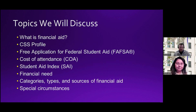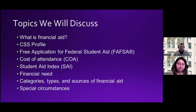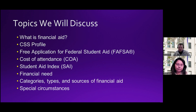We're going to get started with the presentation. Topics we will cover tonight: What is financial aid? The CSS Profile, the FAFSA (the Free Application for Federal Student Aid), Cost of Attendance (COA), the Student Aid Index (SAI), Financial Need, Categories, Types and Sources of Financial Aid, Special Circumstances, and FAFSA simplification and where we are right now in the FAFSA process.